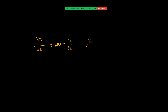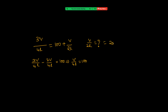Third harmonic of the closed pipe: 3V/(4L). First harmonic of open pipe: V/(2L). The condition given is: 3V/(4L) − V/(2L) = 100. This simplifies to 3V/(4L) − 2V/(4L) = V/(4L) = 100 Hz. Wait — multiplying and dividing: V/(4L) = 100, so the fundamental frequency of the open pipe V/(2L) = 200 Hz. That is our answer.